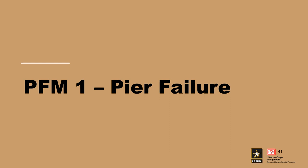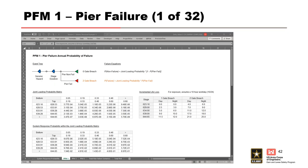Now that we have a handle on the process, let's get into the evaluation of PFM1, pier failure. The event tree for failure of the pier is shown at the top of the slide. There's only one pier at the project, so there are only two failure combinations: the pier fails or it doesn't. If it fails, it always results in a two-gate breach. Out to the right of the event tree, we see the failure equations that we'll use in the risk calculations.